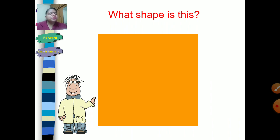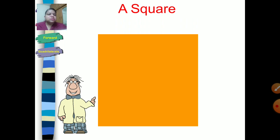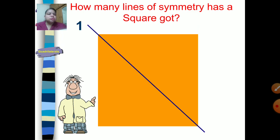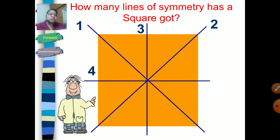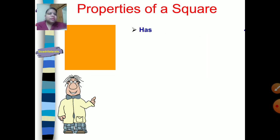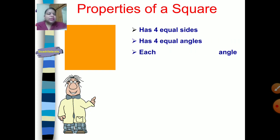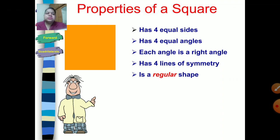All four sides are the same and all four angles are right angles — so this is a square. How many lines of symmetry does it have? We draw one diagonal, then the other diagonal, then vertical and horizontal lines. These are all the lines of symmetry of the square. When you fold the square along any of these lines, both parts will coincide. You can verify this by paper folding — cut a square, draw any diagonal, fold along it, and the parts will coincide.